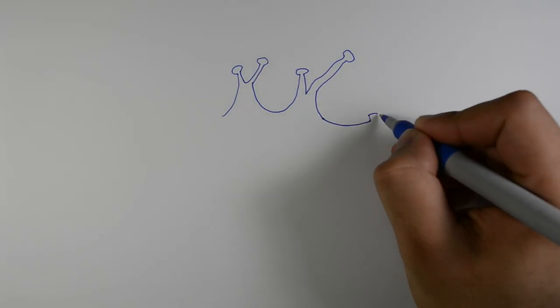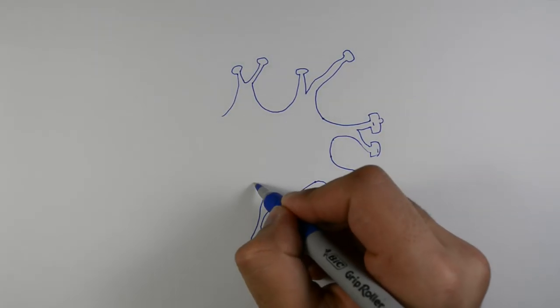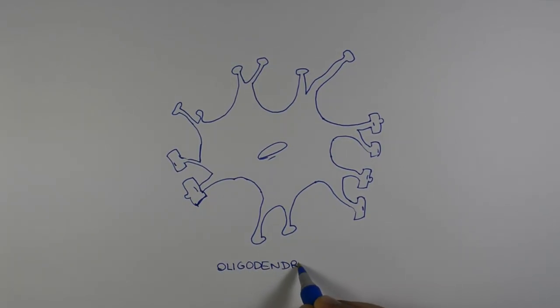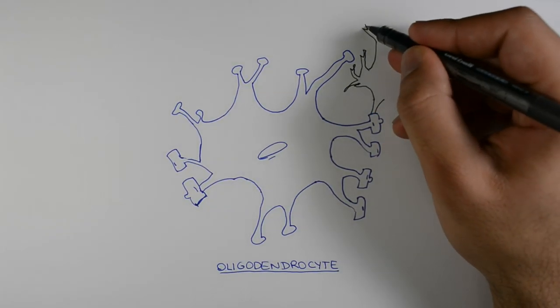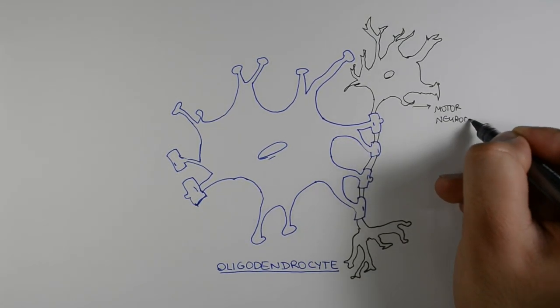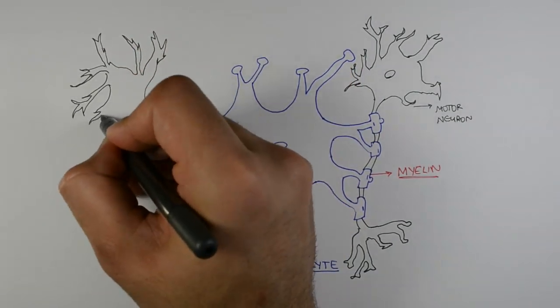Some cells are responsible for producing a layer of insulating fat and proteins around neurons, and this layer is called myelin. The cells that produce myelin are known as oligodendrocytes. Myelin plays a major role in helping signals travel through the body at an extremely fast rate, allowing us to react to our surroundings within a split second.